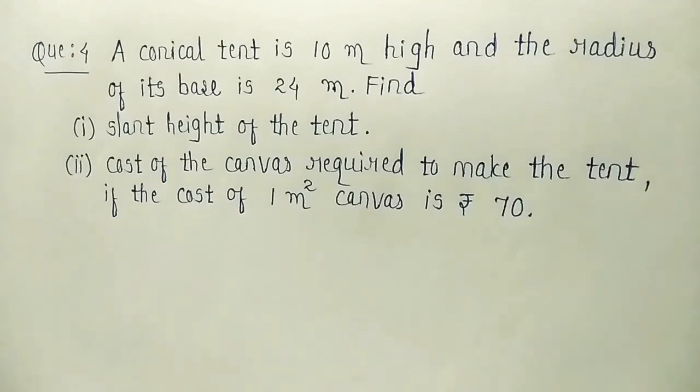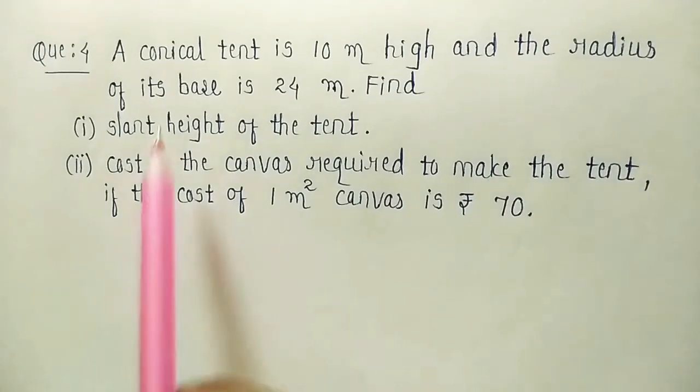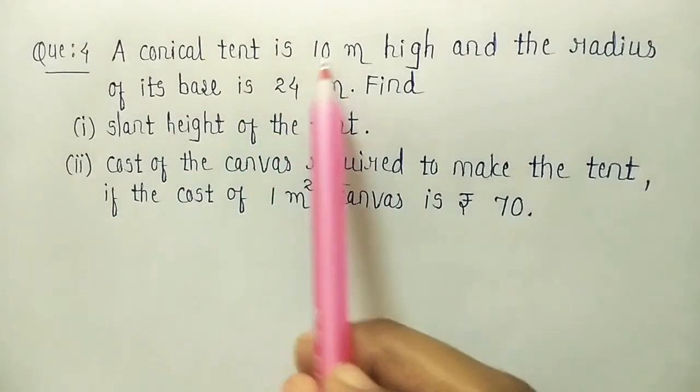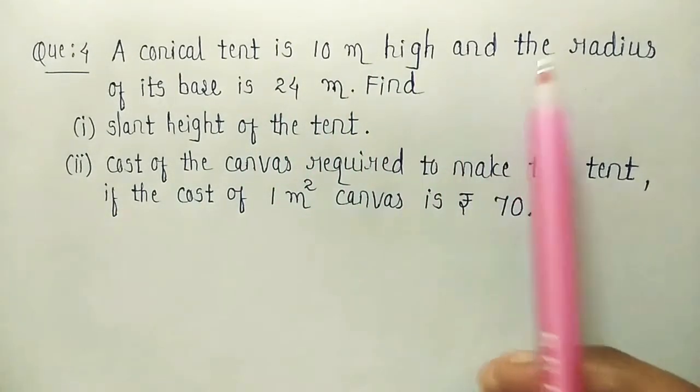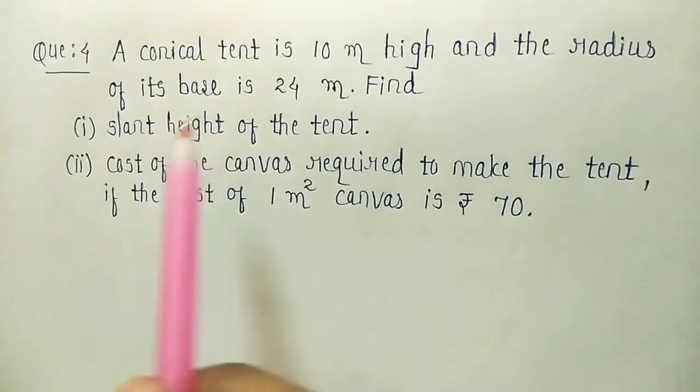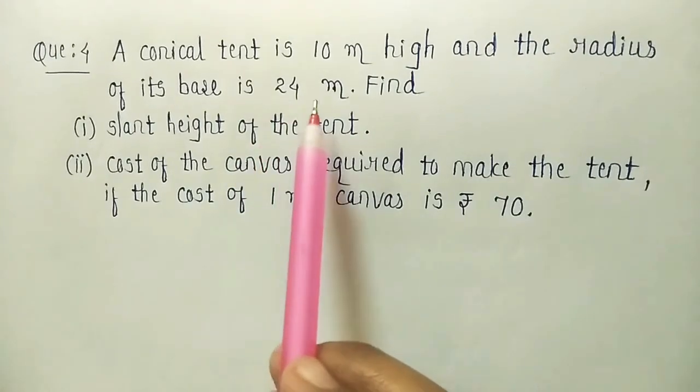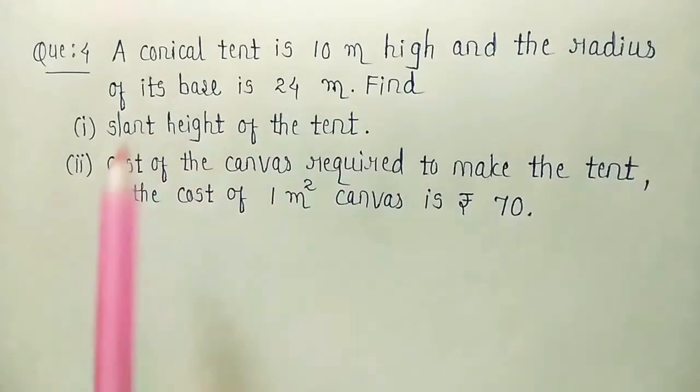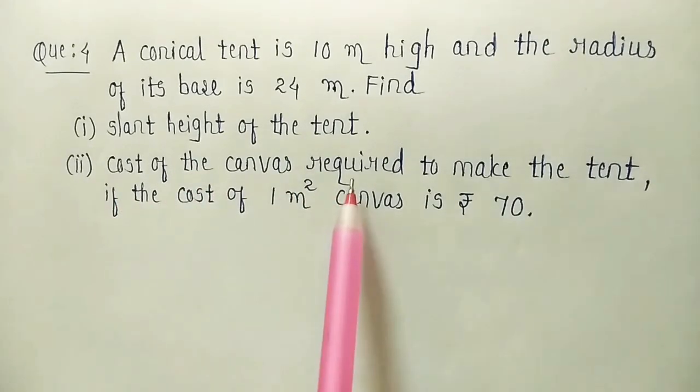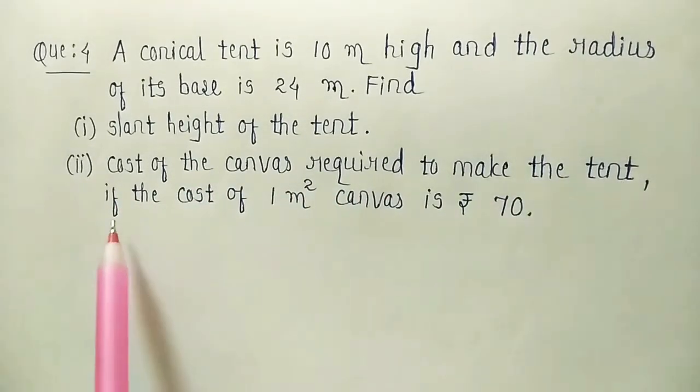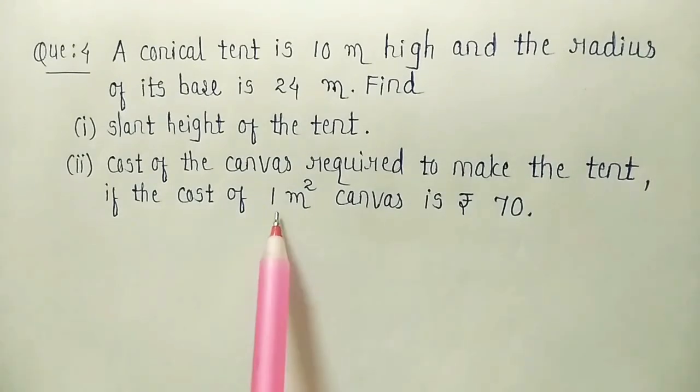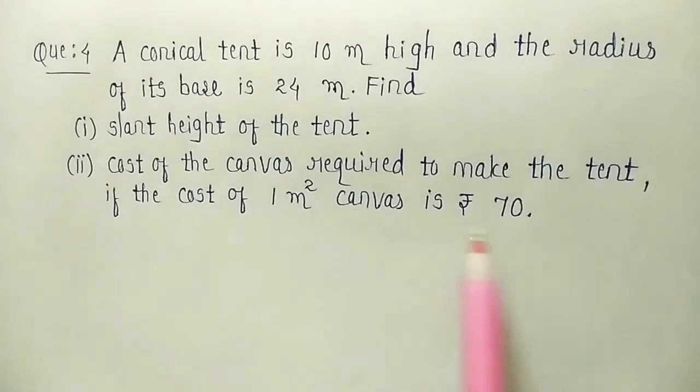Question number 4 of exercise 13.3. A conical tent is 10 meter high and the radius of its base is 24 meter. Find slant height of the tent and cost of the canvas required to make the tent if the cost of 1 meter square canvas is rupees 70.